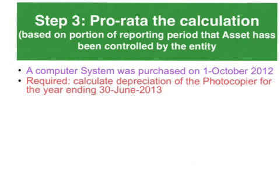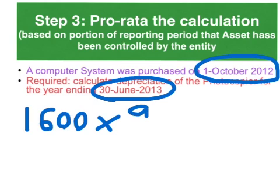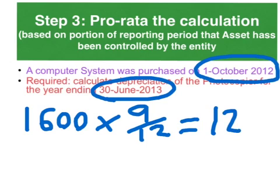In this instance we can't claim a full year's depreciation because we haven't owned or had control of the asset for the full year. Looking at the dates, we bought it on the 1st of October 2012 and the reporting period ends 30th of June. So we multiply the full year's depreciation by the number of months over 12 that we've controlled the asset — 3 quarters of $1,600 equals $1,200.